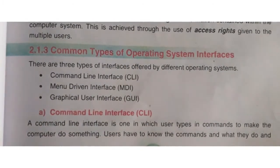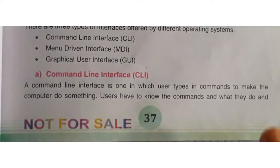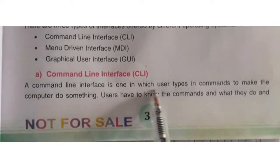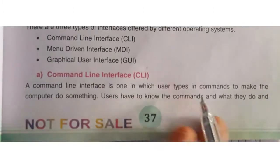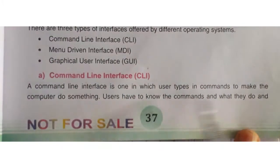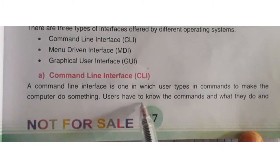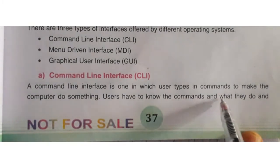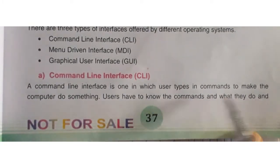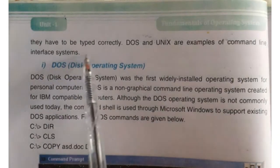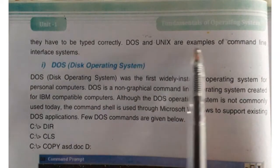Now the modern interface is graphical user interface. First we will discuss what is command line interface, CLI. The old type of interface is command line interface, also called text-based interface. In this type of interface, the user has to use commands to make the computer do something. Users have to know commands and what they do.